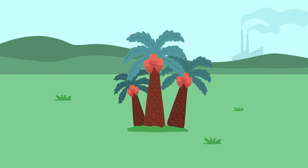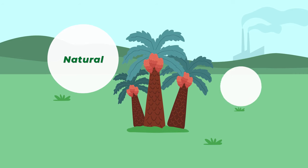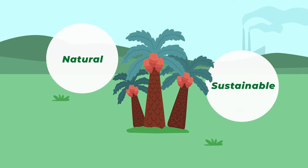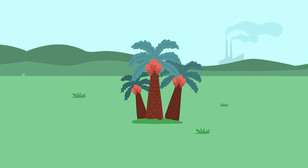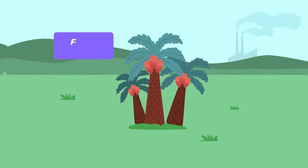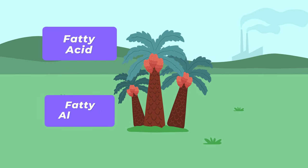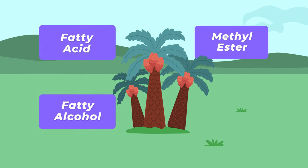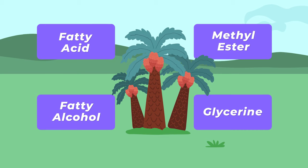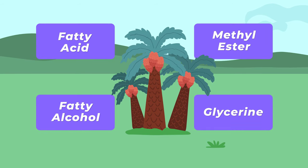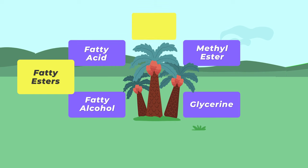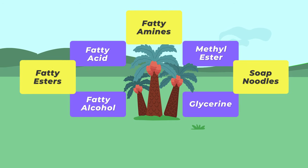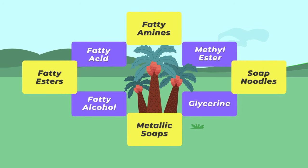Being of plant origin, palm-based oleochemicals are natural and sustainable, thus promoting the development of green chemistry. Some examples of oleochemicals produced from Malaysian palm oil are fatty acid, fatty alcohol, methyl esters and glycerin. While examples of oleochemical derivatives are fatty esters, fatty amines, soap noodles and metallic soaps.